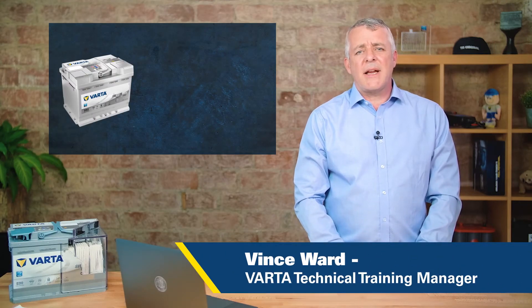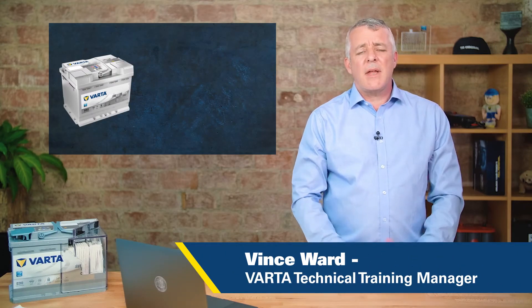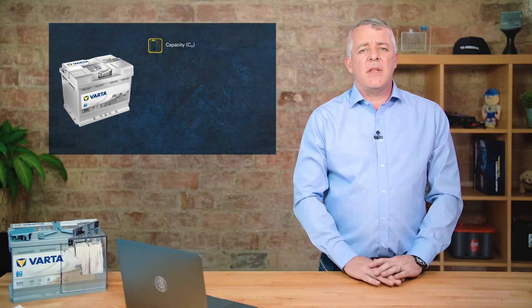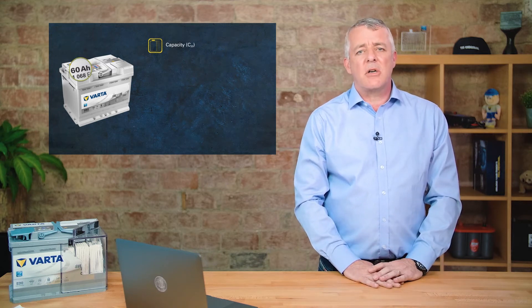Let's talk about the second electrical rating that is on the label: capacity. Capacity is the amount of energy that the battery can store. If we have a look at this battery, we can see that it is a 60 amp hour battery.